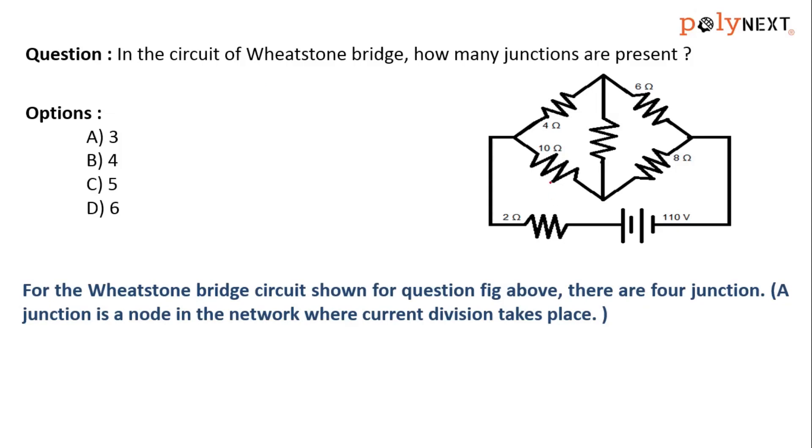Observing this question, we can see this is a junction where there is an incoming current here and there may be two outgoing currents. Therefore, this point or this node can be considered as the first junction.